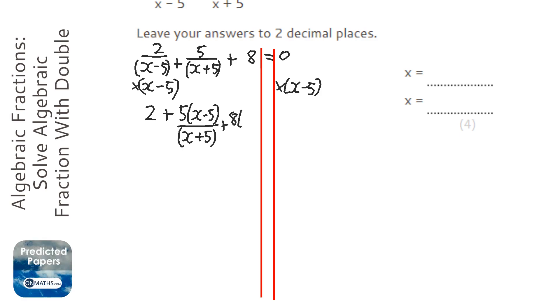And then we've got 8 brackets (x minus 5) equals zero. Next thing we're going to do is times everything by (x plus 5) to get rid of the other fraction, and we do the same to the other side. Again, it won't do anything.